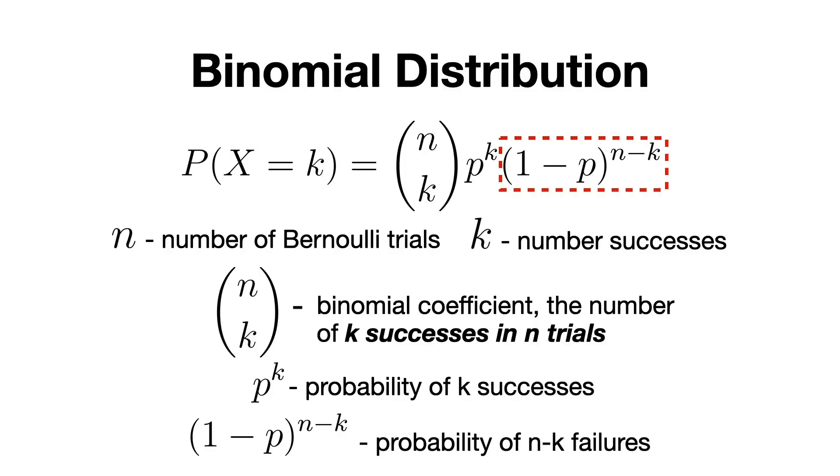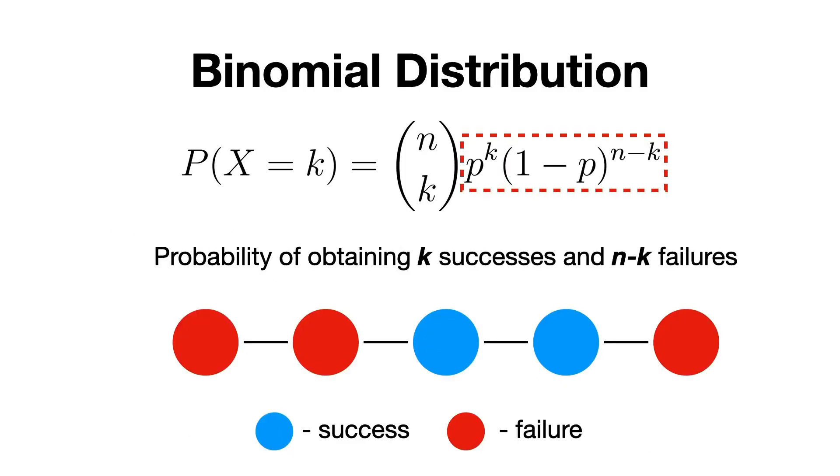Overall, the formula can be interpreted as follows: p^k multiplied by (1-p)^(n-k) is the probability of obtaining the sequence of n independent Bernoulli trials, in which k trials are successful, and the remaining n-k trials result in failure.